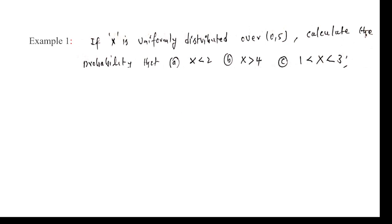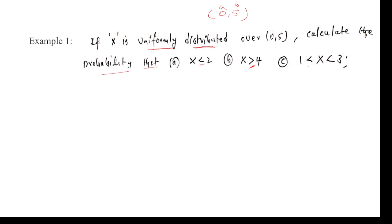Coming to an example: uniformly distributed data from 0 to 5, meaning a = 0 and b = 5. This is very important for university exams. If the data is uniformly distributed, find the density and find the probability. I am assuming the cases: x ≤ 2, x ≥ 4, and 1 ≤ x ≤ 3.